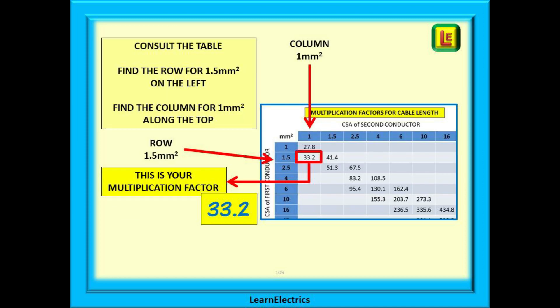Let's consult the table. Find the row for 1.5mm down the left-hand side. Find the column for 1mm along the top. And where the row and column cross is your multiplication factor. Write this second number down.